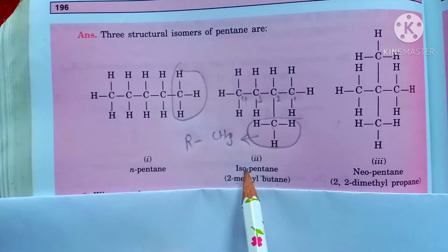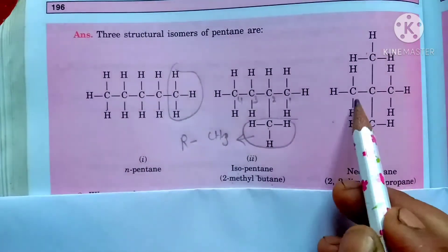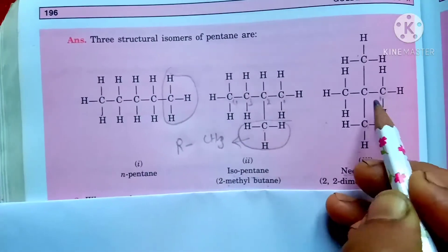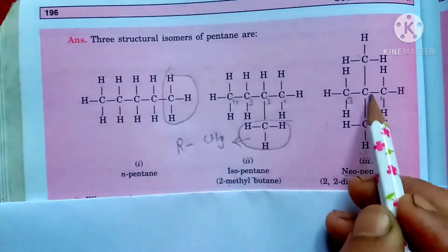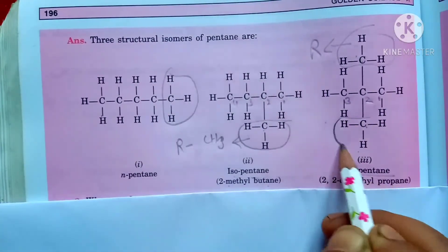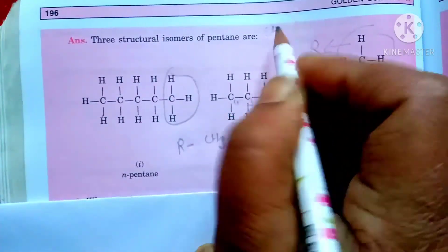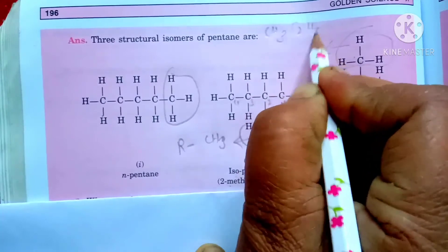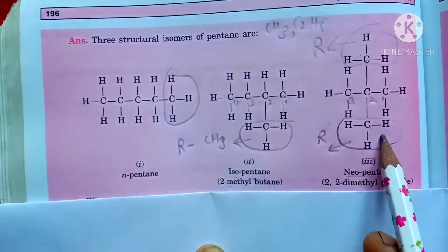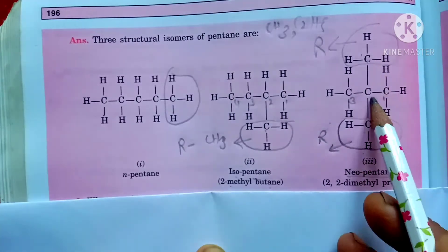And if two groups come on the centre position, then we call it neopentane. Look at the first, second, and third carbon atoms. CH3 is a group of alkyl group, and C2H5 is also an alkyl group. So here in two positions we have two groups.